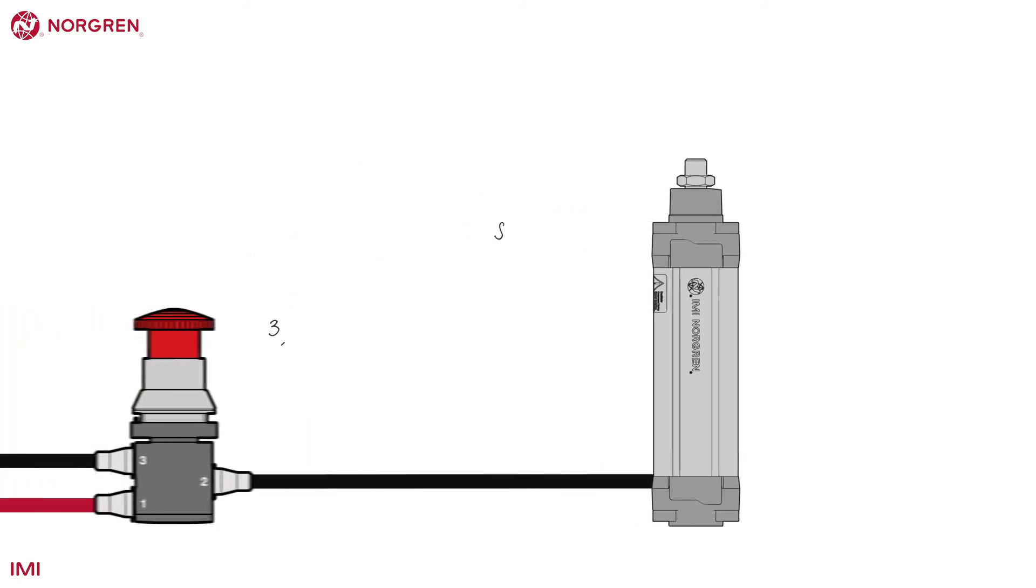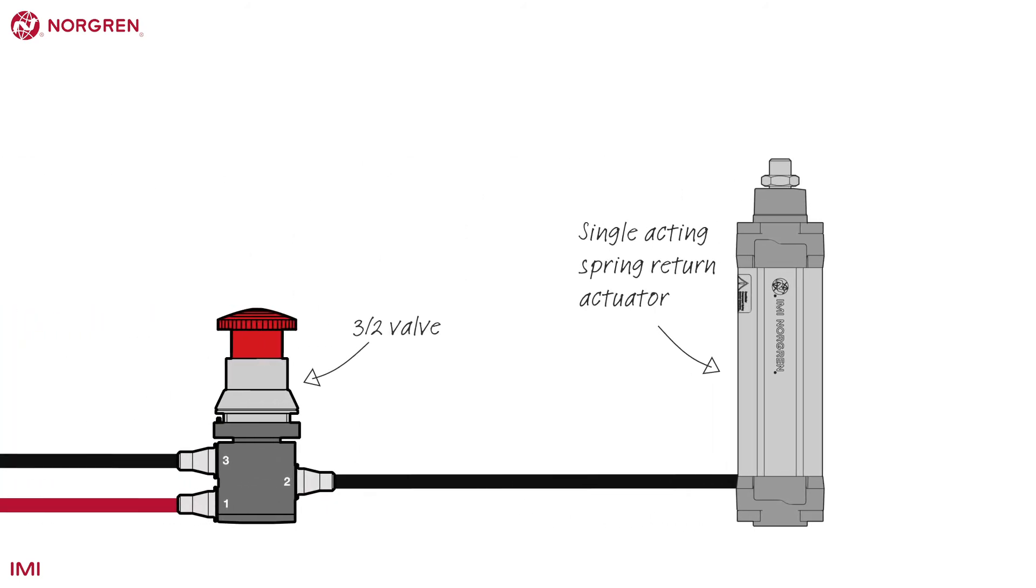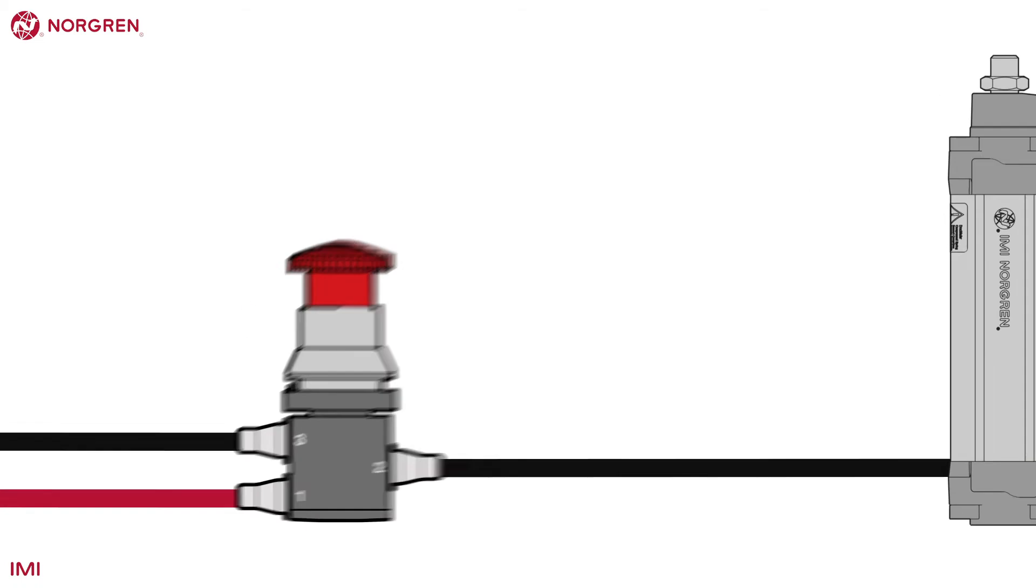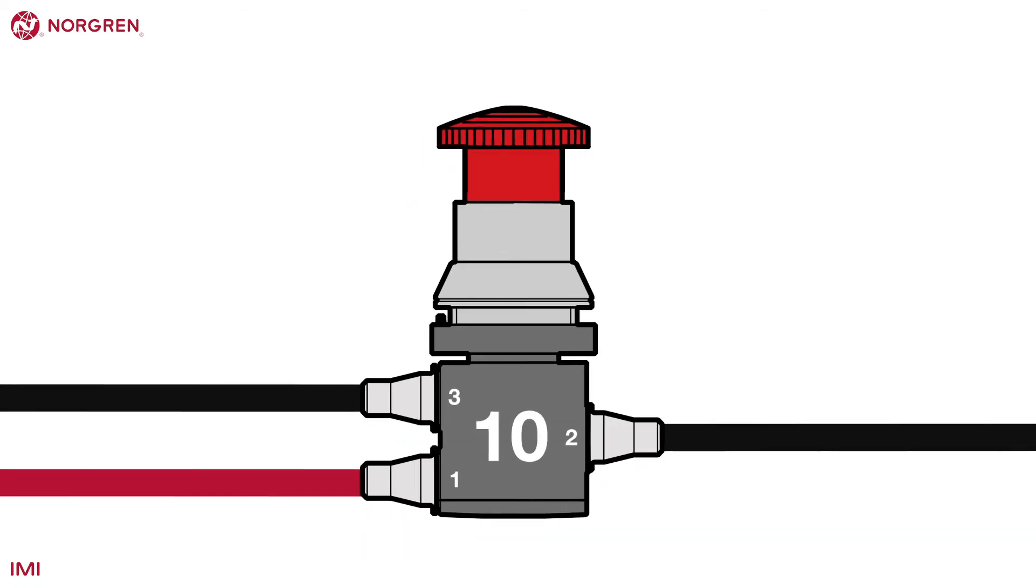Here is a simple example of a 3-2 valve operating a single-acting spring return actuator. Initially, the system is at rest, the button is not pressed and the valve is in the 1-0 position, so no air is passing to the cylinder.